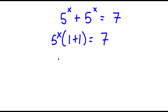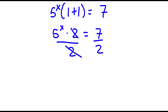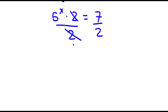Now 1 plus 1 is equal to 2, so I have phi to the power of x times 2 is equal to 7. Now I'm going to divide both sides by 2, so then these two cancel out, and I get 5 to the power of x is equal to 7 over 2.